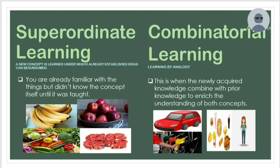The third process is superordinate learning. You are already familiar with certain things but did not know the broader concept until it was taught. For example, you are familiar with fruits, vegetables, and meat as shown in the picture — you know the things, but you didn't know the concept itself. You didn't know the function of those things until you were taught that they contribute to a healthy diet to help the body become healthy. So a new concept is learned under which already established ideas can be subsumed.